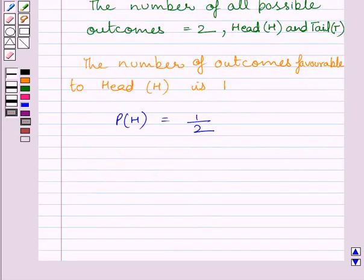Similarly we can also find out probability of getting tail. It is also equal to 1 upon 2. We know number of outcomes favorable to tail is 1 and number of all possible outcomes is equal to 2. So probability of getting tail is equal to 1 upon 2.